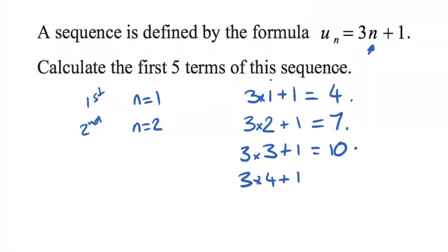3 times 4 plus 1 is going to give us the fourth number in the list. That's going to be 13. And then 3 times 5 plus 1 will find us the fifth number in the list. That one is going to be 16.